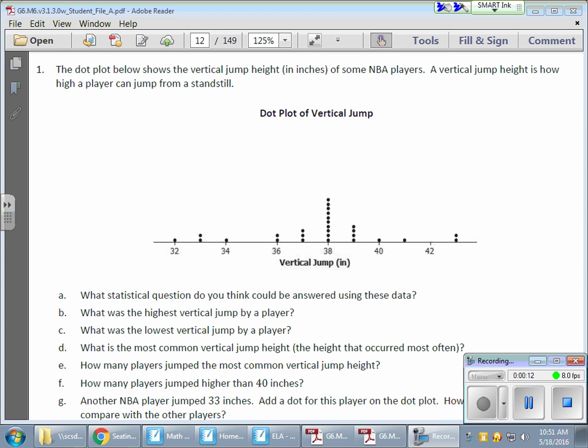So here we have the dot plot for some NBA basketball players and their vertical jump, how high they can jump. And you can see that we don't really have a widespread here. It's pretty narrow. It's a narrow spread because we have a very dominant value that shows up here with 38 inches, which is quite the vertical jump, by the way. And it's showing up a lot.